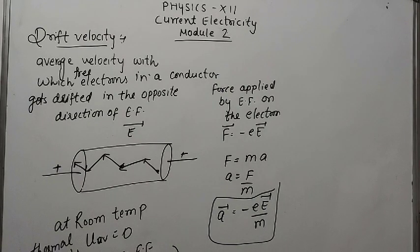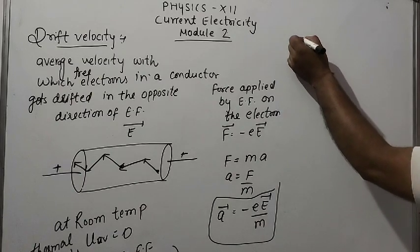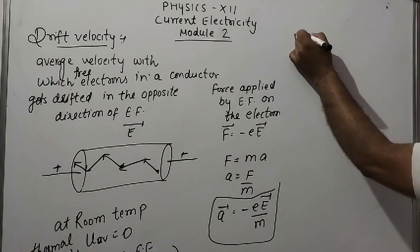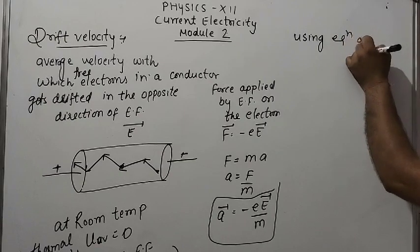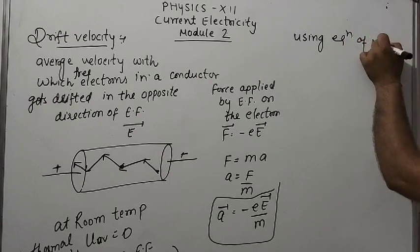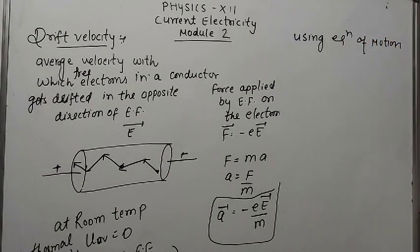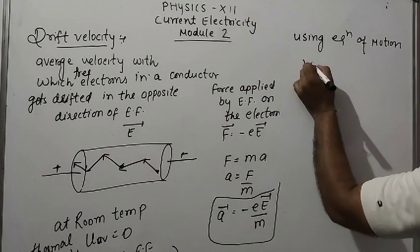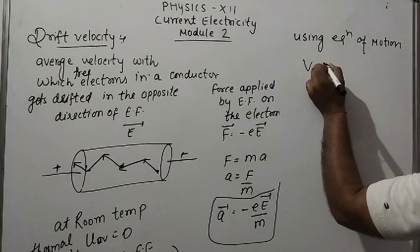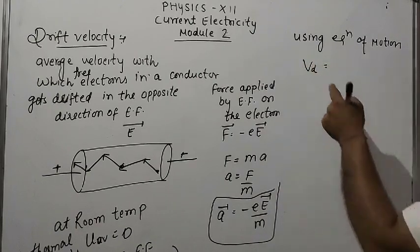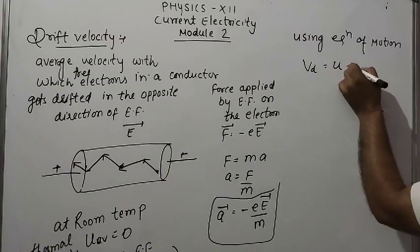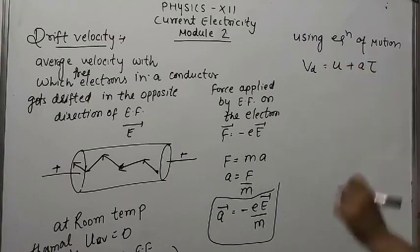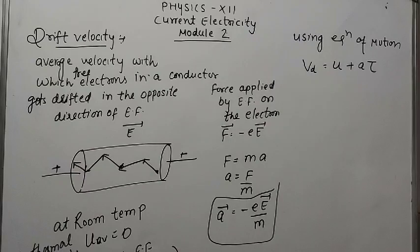Using the first equation of motion, V equals U plus A times T, where V_D is the drift velocity (final velocity), U is the initial velocity, A is acceleration, and T is tau — the relaxation time.